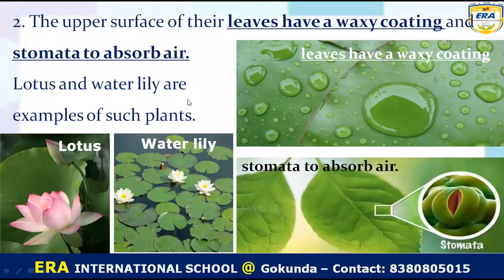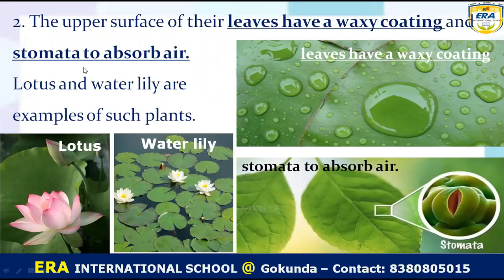The second feature of fixed plants is that the upper surface of the leaves has a wax coating, which does not allow water to enter — water stays on the surface. They also have stomata, which are holes or pores on the leaves useful for absorbing air. That is why they can easily float on the water. Examples of fixed plants are number 1: lotus, and number 2: water lily.